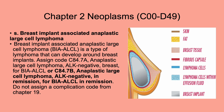Also in Chapter 2 neoplasms, regarding breast implant associated anaplastic large cell lymphoma, BIA-ALCL — a type of lymphoma that can develop around a breast implant. They added code C84.LB, anaplastic large cell lymphoma, ALK negative, in remission. So they added a code specifically for when the lymphoma is in remission, not just for active lymphoma. Again, more specific coding.